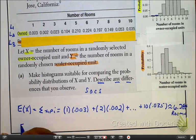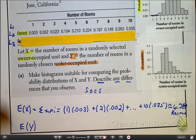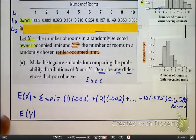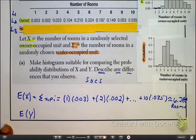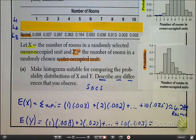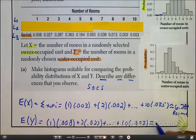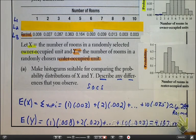Now go ahead and find the expected amount or the average, and this is actually on the next page, it kind of jumped ahead, for the renter. And I find this to be 4.187 rooms.